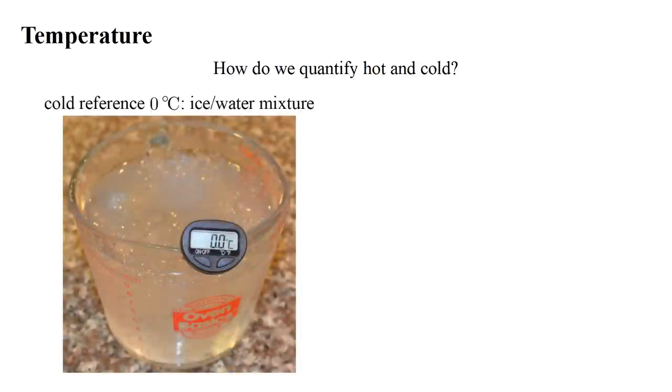A standard approach is to find various physical phenomena that can serve as temperature references. In the Celsius temperature scale, zero degrees is essentially the freezing point of water. Here we have an ice-water mixture in equilibrium. My thermometer registers zero degrees Celsius. If it didn't, I could use this mixture to calibrate its zero degree reading.